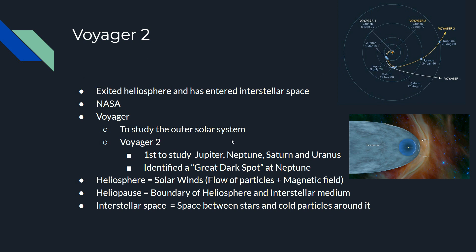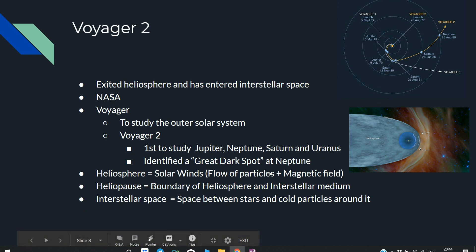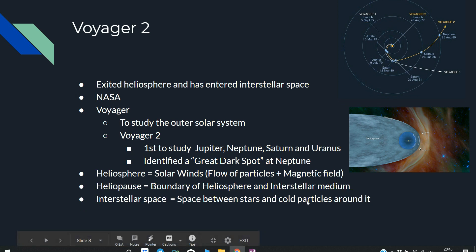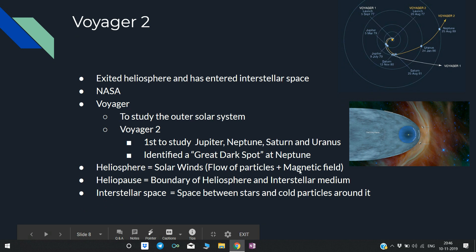Voyager 2 also identified a great dark spot at Neptune. The heliosphere is the blue region — a region of solar winds, that is flow of solar particles plus magnetic field, created by solar activities. The heliopause is the boundary between the heliosphere and interstellar medium. Interstellar space is the remaining region beyond, filled with cold particles, and these cold particles confirmed that Voyager 2 has exited the heliosphere.